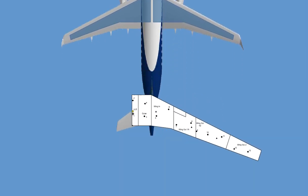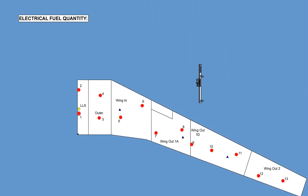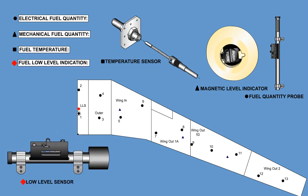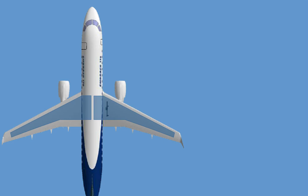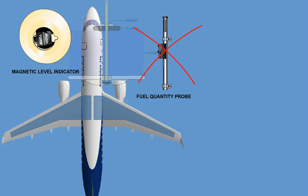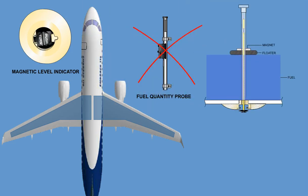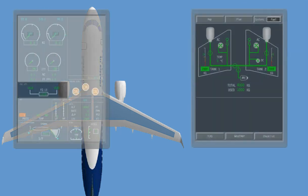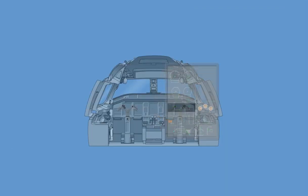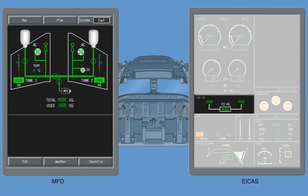The fuel system indication system consists of the following elements: electrical fuel quantity and mechanical fuel quantity, fuel temperature, and fuel low-level indication. The primary means of determining fuel quantity is an AC capacitance type electrical fuel indicating subsystem. If the electrical fuel indicating system should fail, a backup mechanical quantity indicating subsystem, which operates by means of magnetic level indicators, allows the aircraft to be dispatched. The fuel system can be monitored by a synoptic page on the cockpit displays. The electrical indication system provides a highly accurate measurement of fuel mass in the wings, fuel temperature, and fuel low-level.